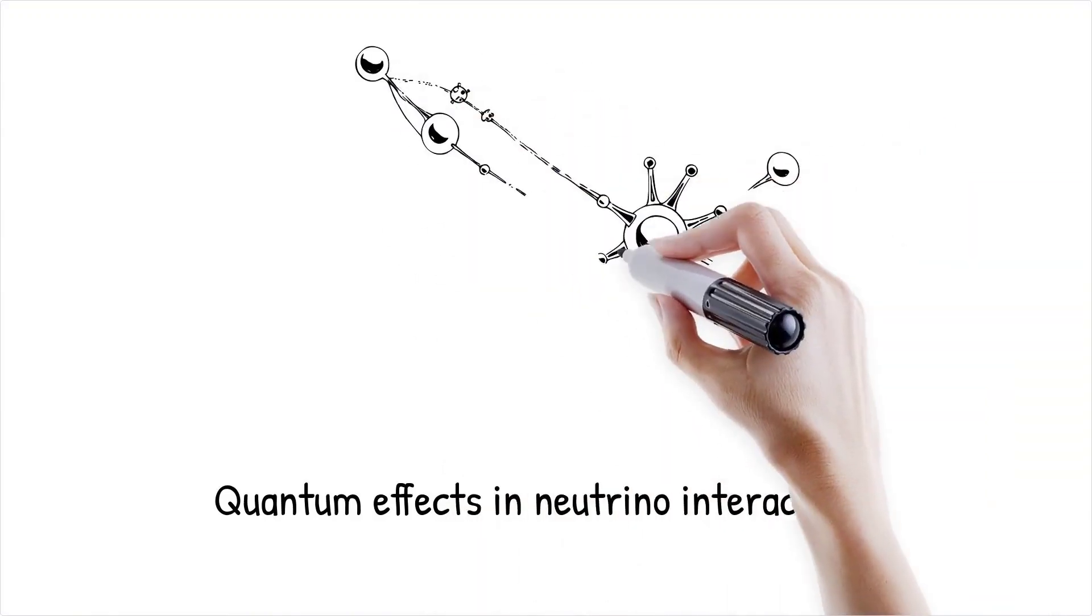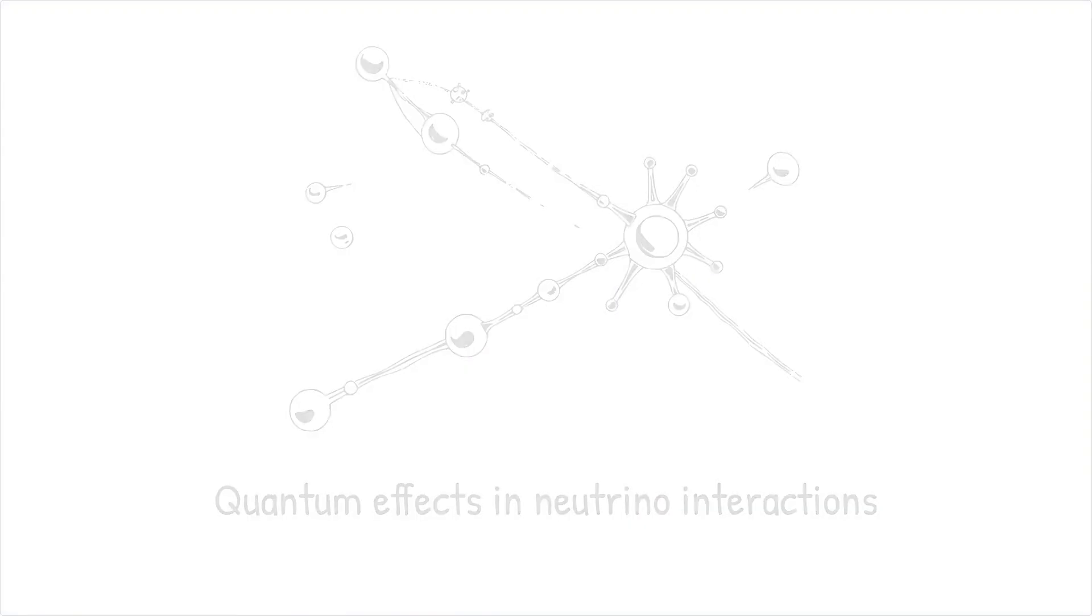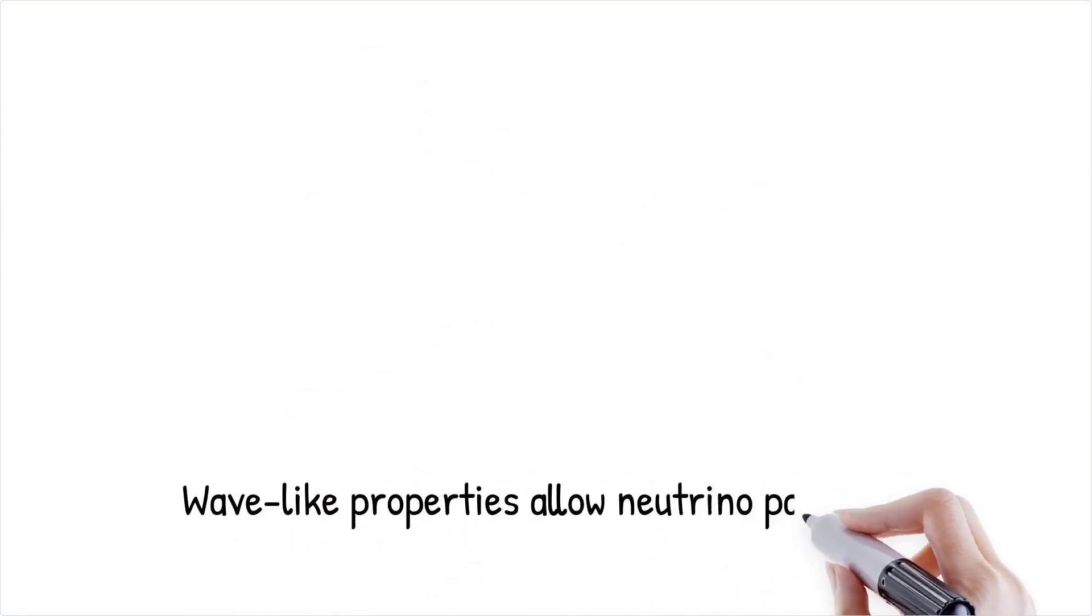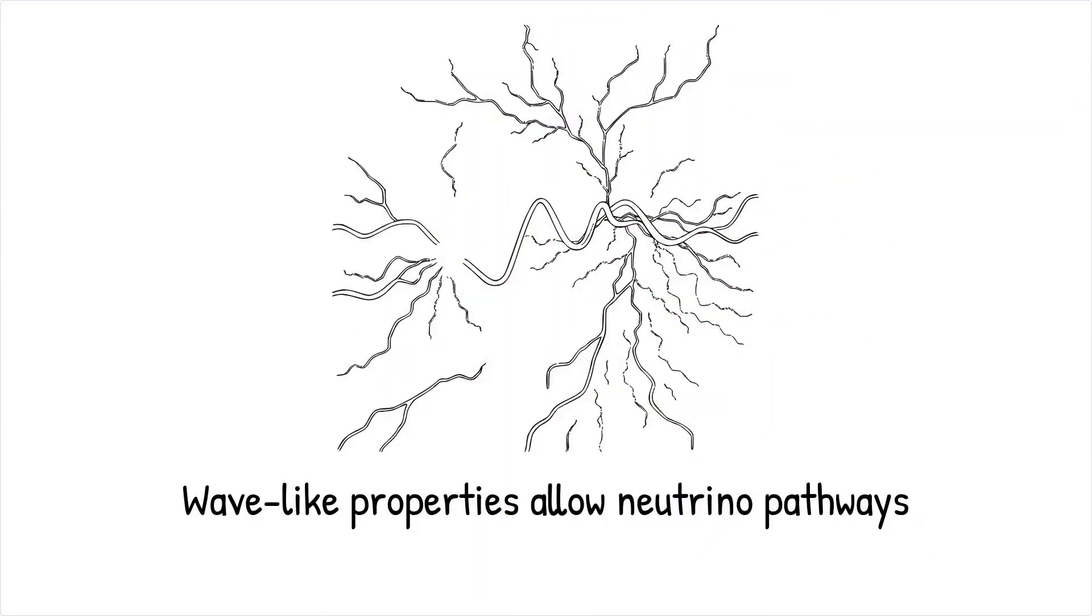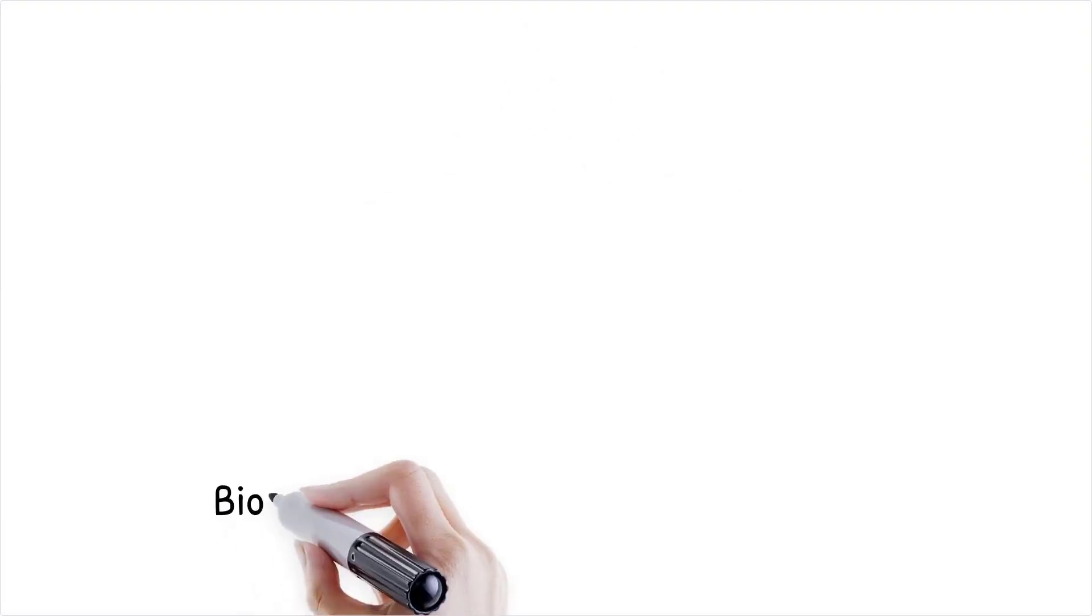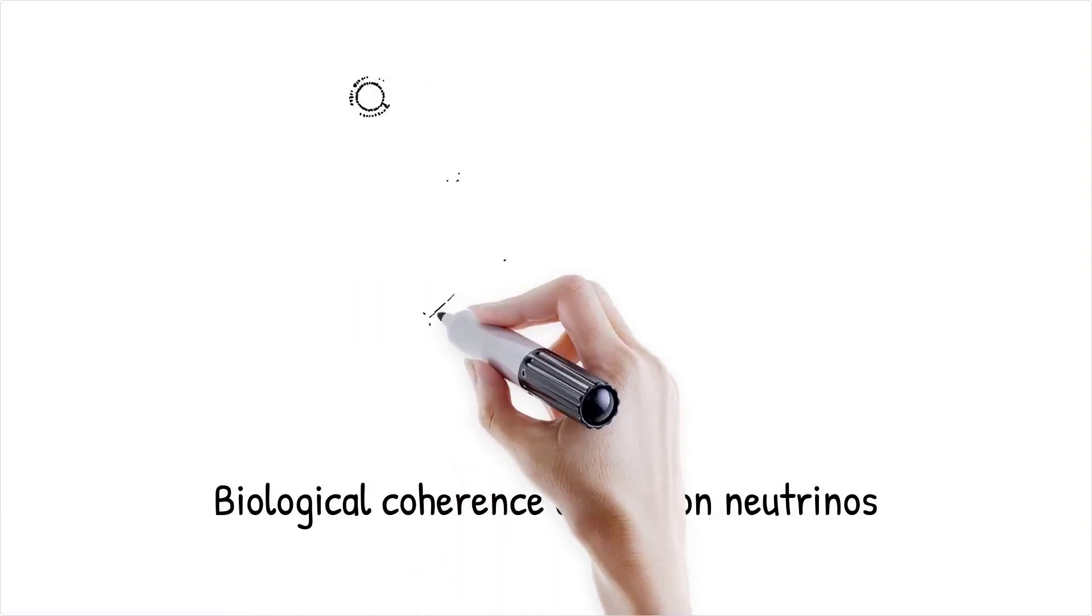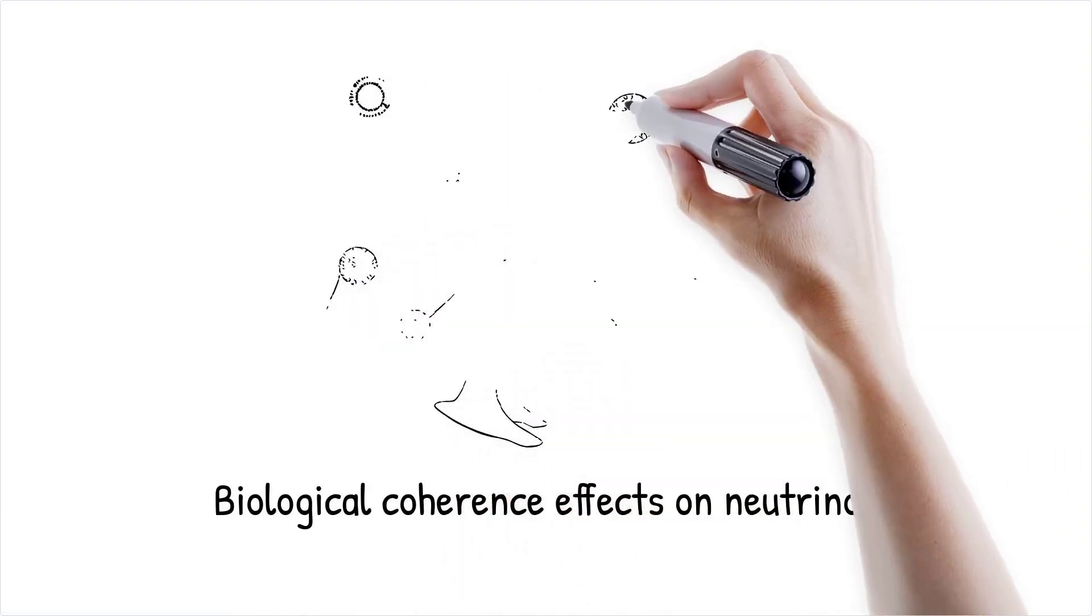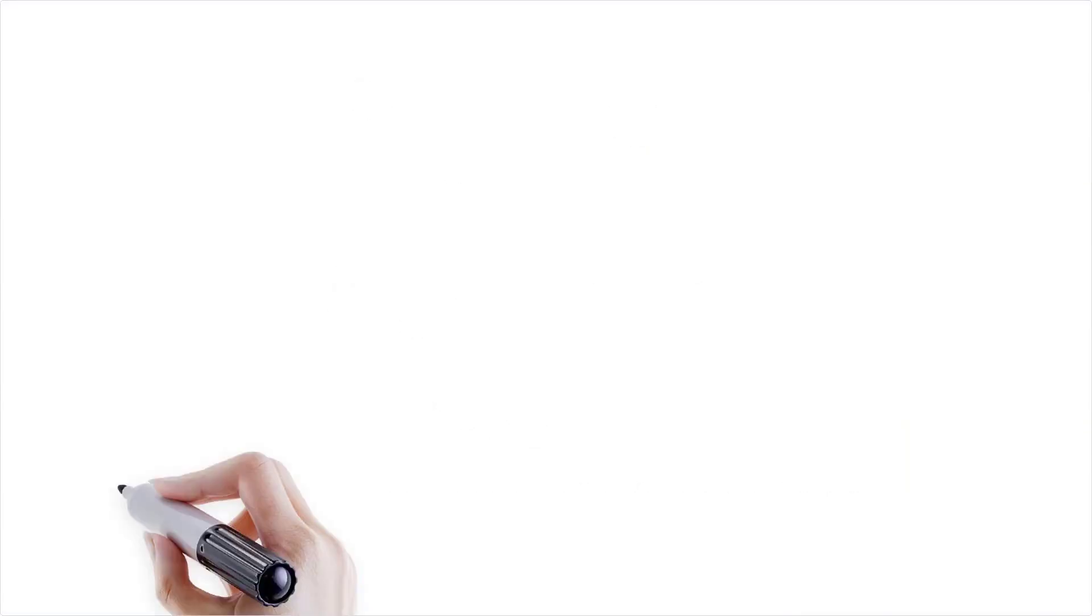Quantum effects such as tunneling and entanglement could play a role in how neutrinos interact with biological molecules. Since neutrinos operate on the quantum scale, their wave-like properties might allow them to avoid interactions by exploiting pathways not accounted for in classical physics models.